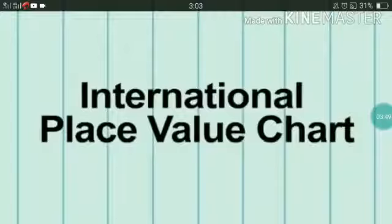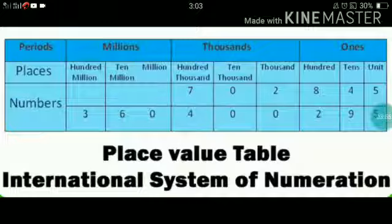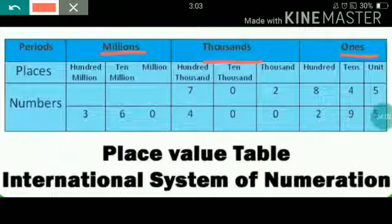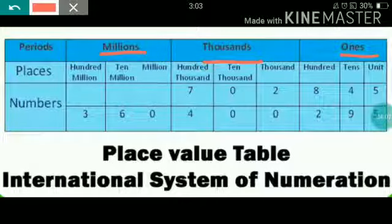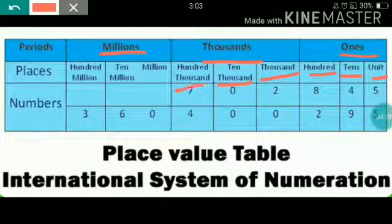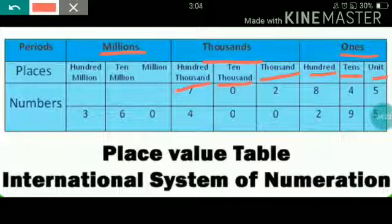International Place Value Chart: In the international place value chart, periods are ones, thousands, and millions. Ones is divided into three places: units, tens, and hundreds. Thousands is divided into three places: 1000, 10,000, and 100,000. Millions is divided into three places: million, 10 million, and 100 million.